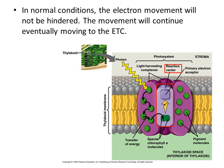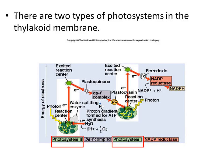That was an abnormal condition. In normal conditions, the electron movement will not be hindered and will continue, eventually moving to the ETC. There are two types of photosystems in the thylakoid membrane. Each one will be stimulated very similarly — radiant energy will stimulate the photosystem, the electrons will be stimulated, moving from pigment to pigment around the photosystem, eventually going to the reaction center.